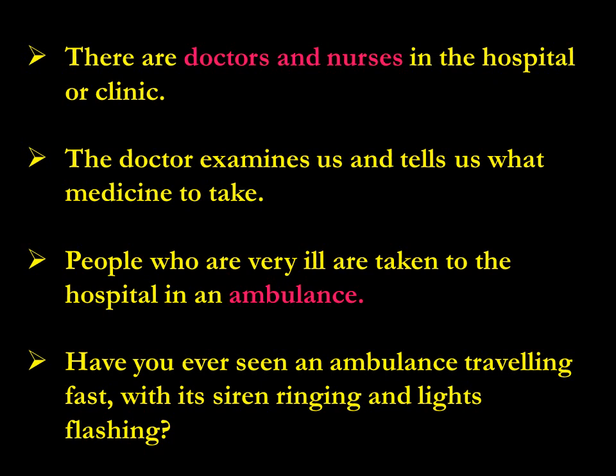People who are very ill are taken to the hospital in an ambulance. The word ambulance is A-M-B-U-L-A-N-C-E — a vehicle which takes people who are very ill, very weak, who can't walk and are not able to go to the hospital on their own. Have you ever seen an ambulance traveling fast? It always travels very fast — even if there is a traffic jam, we have to leave space for the ambulance. How do we know an ambulance is coming? That siren — red color light flashing and siren ringing. That shows the ambulance is coming, so we have to give way.